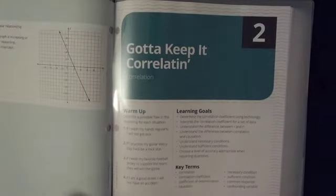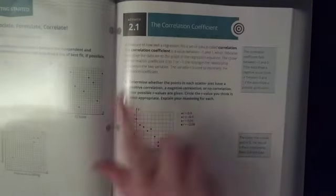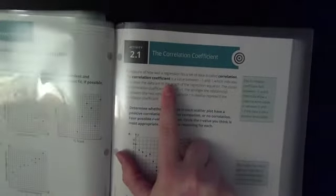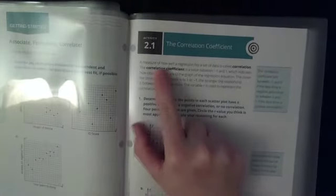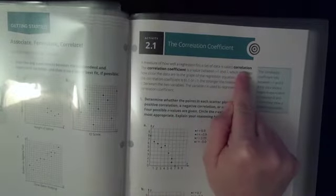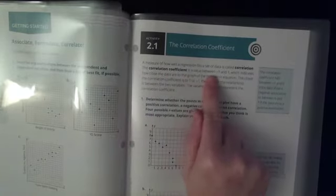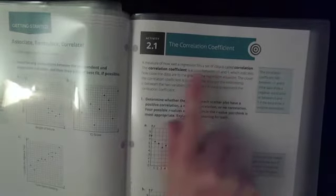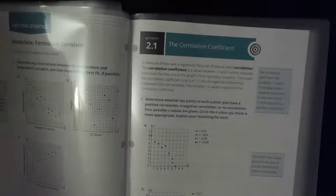This is a continuation of what we were doing in the last set of notes. The correlation coefficient you can see right here. A measure of how well a regression fits a set of data is called the correlation. The correlation coefficient is a value between negative one and one which indicates how close the data are to the graph of the regression equation.